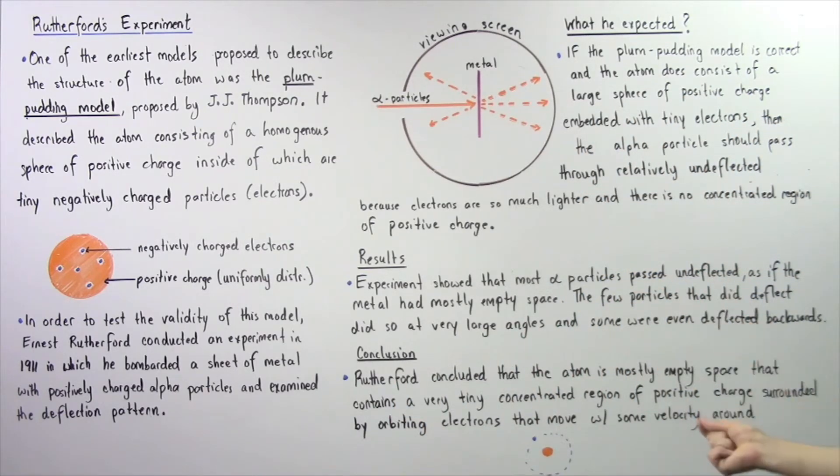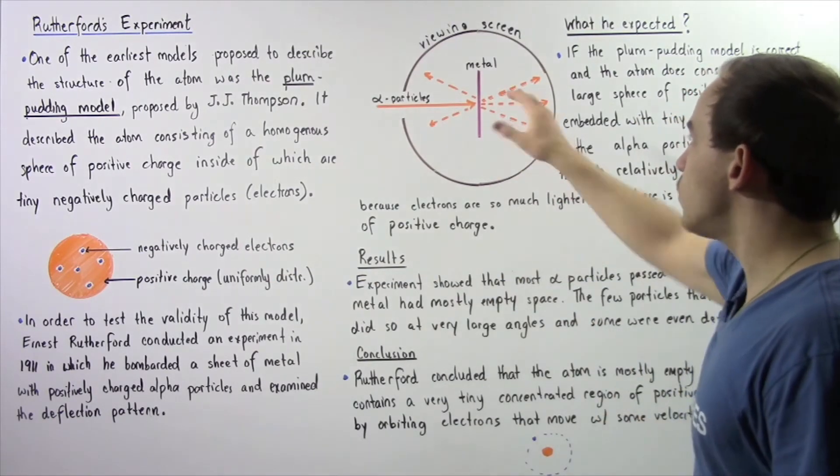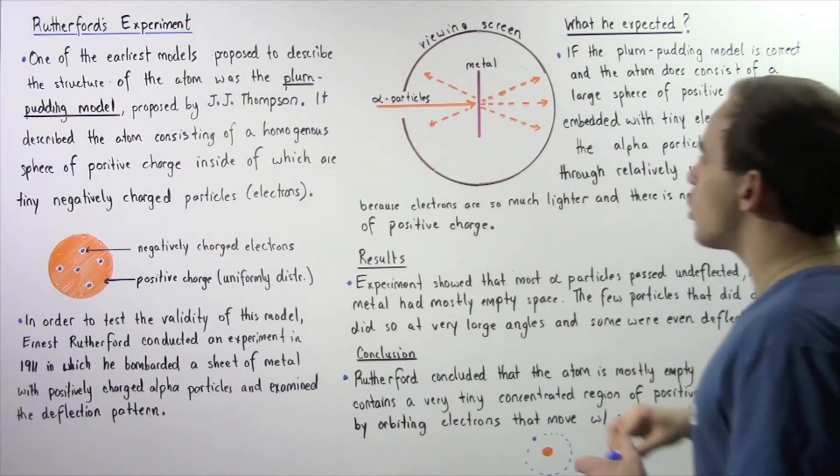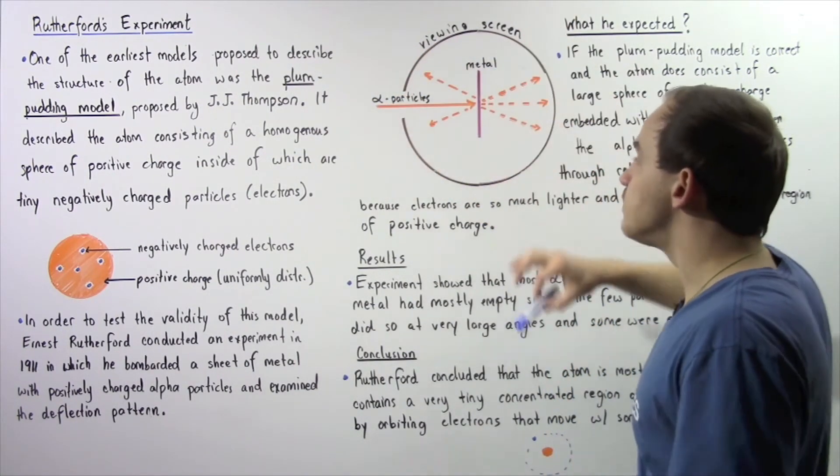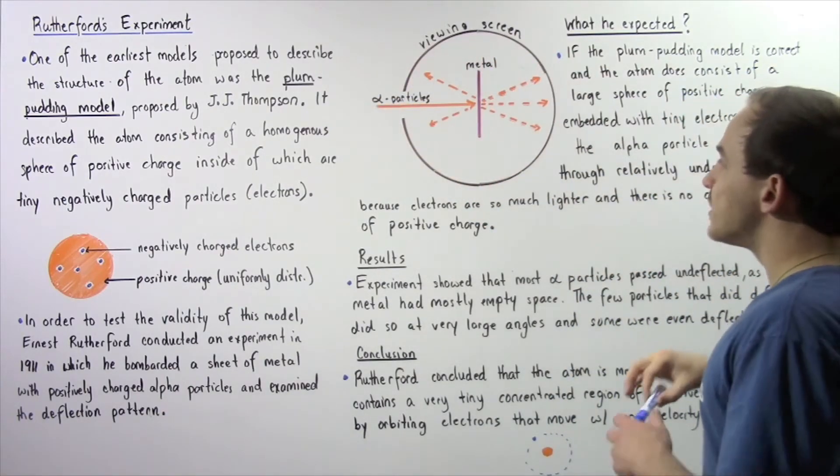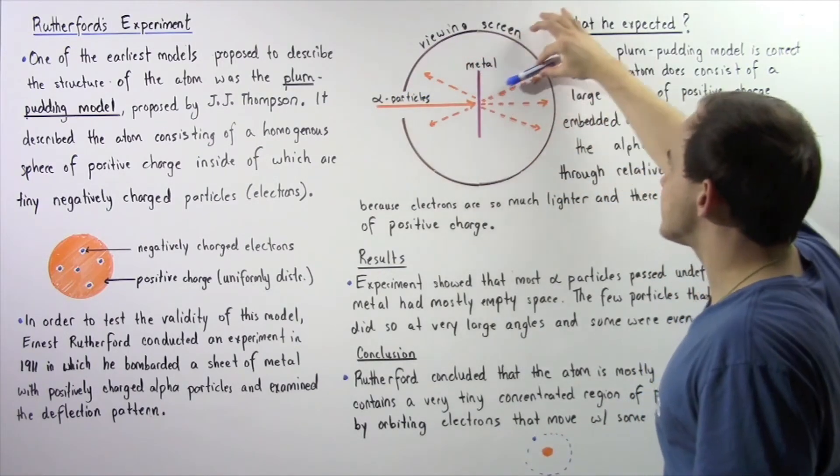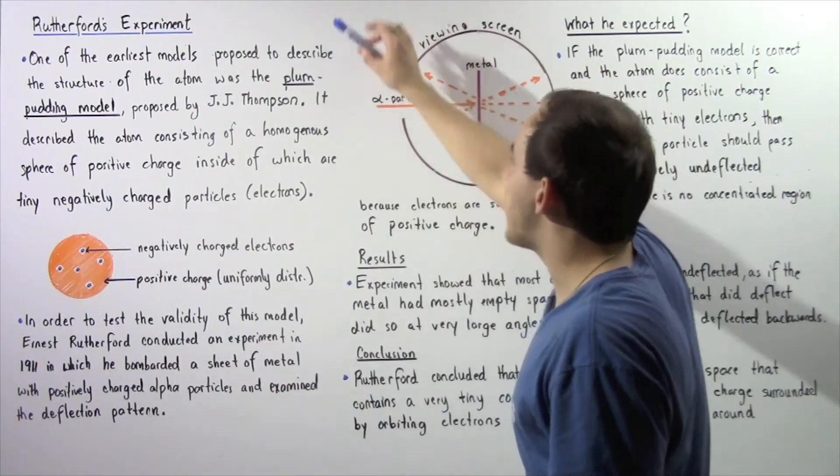The few particles that did deflect, however, deflected at very large angles. In fact, some were even deflected directly backwards as shown in the following diagram. When these alpha particles hit the metal, most went directly through. Some deflected at slight angles and some deflected at very large angles.